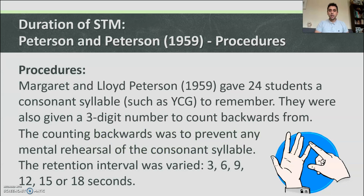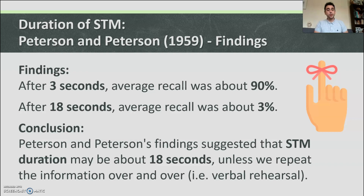Peterson and Peterson: Margaret and Lloyd Peterson gave 24 students a consonant syllable such as YCG to remember. They were also given three-digit numbers to count backwards from — the counting backwards was to prevent any mental rehearsal of the consonant syllable. The retention interval was varied: sometimes three seconds, up to 18 seconds. After three seconds, average recall was about 90%. After 18 seconds, average recall was about 3%. Peterson and Peterson concluded that short-term memory duration may be about 18 seconds unless information is verbally rehearsed.